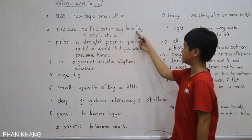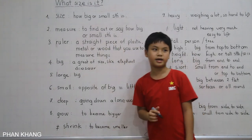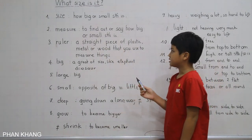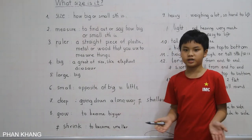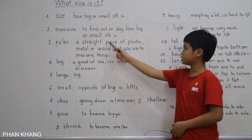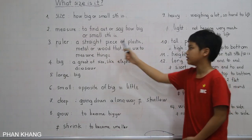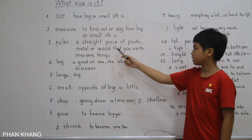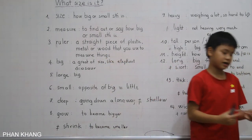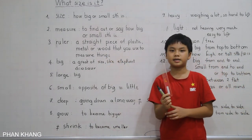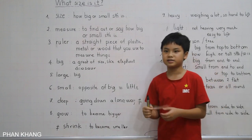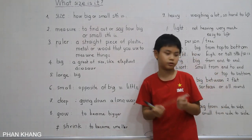Measure is to find out or say how big or small something is. Measure is a verb. So we measure things using a ruler. A ruler is a straight piece of plastic, metal, or wood that you use to measure things. So here is a ruler. Ruler is a noun. To make a sentence with it, we might say 'I have a ruler' or 'This is a ruler' — very simple.